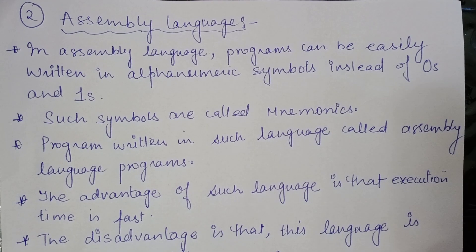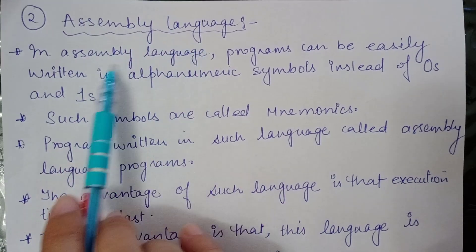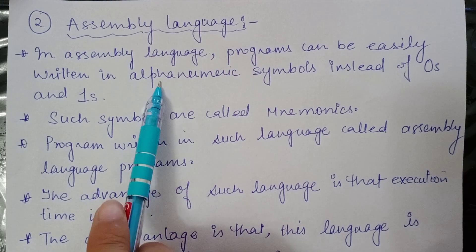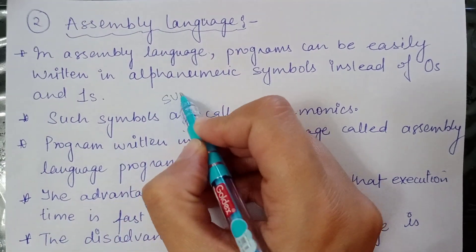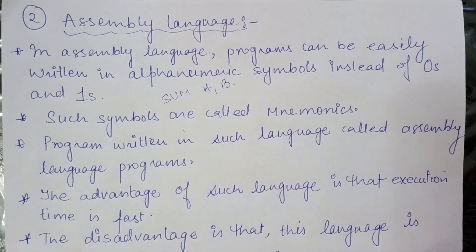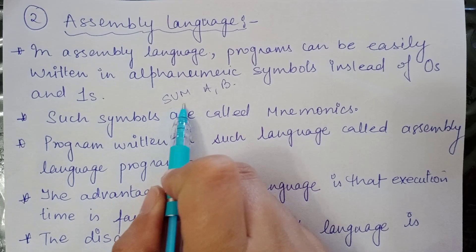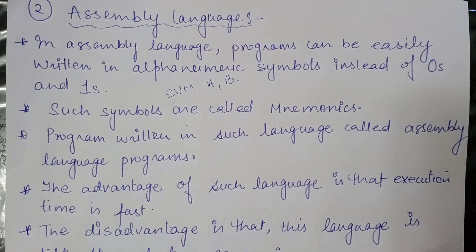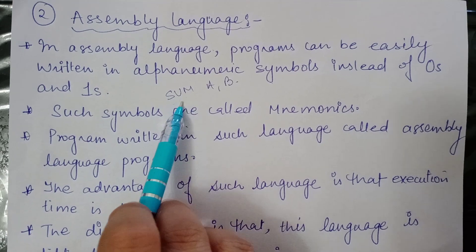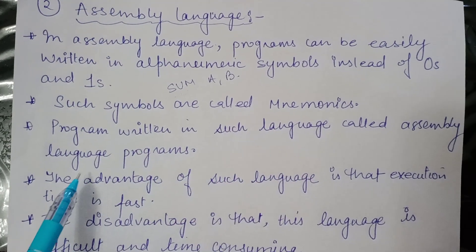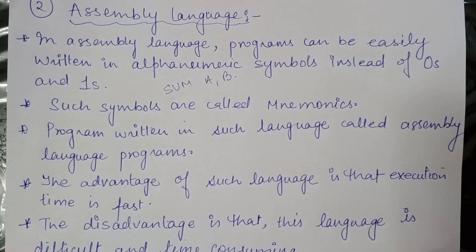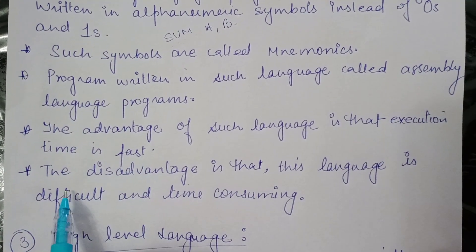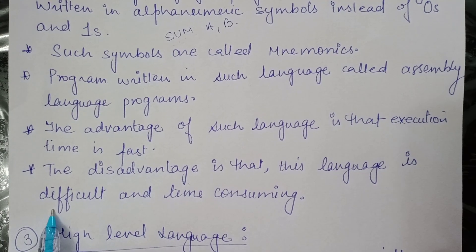Due to various disadvantages in machine language we moved to the second language, assembly language. In assembly language, programs can be written using alphanumeric symbols or mnemonics instead of zeros and ones. For example, I can write 'ADD A, B' meaning we need to add A and B — this is one alphanumeric symbol and it is easy to remember compared to zeros and ones. Programs written in such language are called assembly language programs. The advantage is faster execution; the disadvantage is it is still difficult and time-consuming to learn.